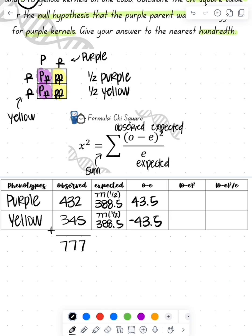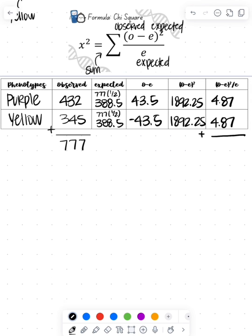We'll do our observed minus our expected which gives us 43.5. Then we're going to square that value which gives us 1892.25. Then we'll take that value and divide it by our expected which gives us 4.87. Now we're going to add these two together to get us that summation which gives us 9.74.